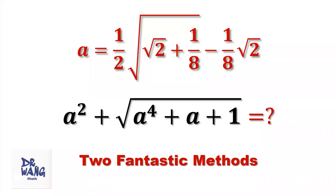Hello everyone, I'm Dr. Wen. Here is the question: if a equals one-half times the square root of the square root of two, plus one-eighth minus one-eighth times the square root of two, what is the value of a squared plus the square root of a to the power of four plus a plus one?